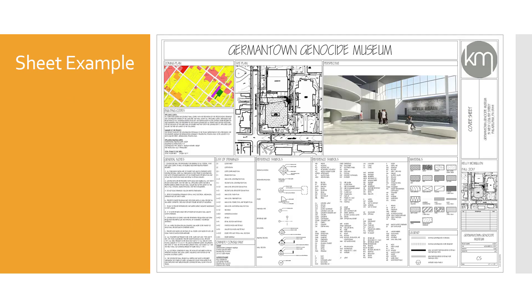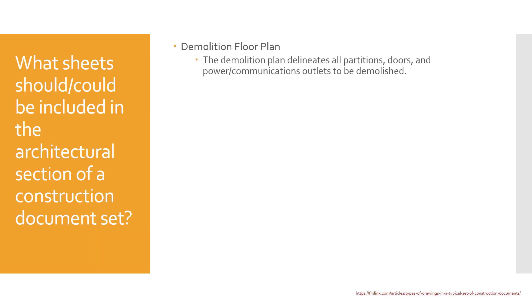Here's an example of a cover sheet, which has a lot of information — a zoning plan, a site plan, and even a perspective rendering. There are general notes, a list of drawings, reference symbols, and material hatching to help represent different materials. A demolition floor plan can also be included in the set — not every plan will have that since some CD sets are new construction — but it helps delineate any partitions, doors, and anything inside the building that's going to be demolished or taken out for a remodel.